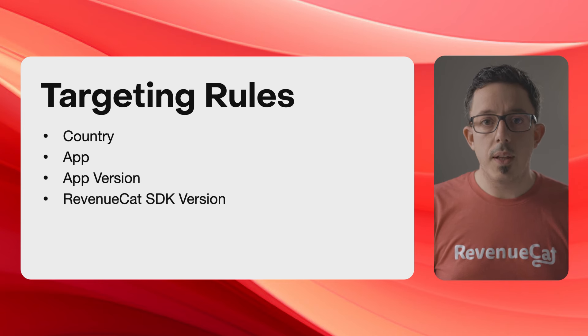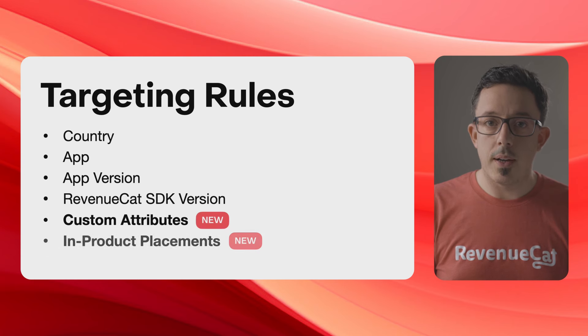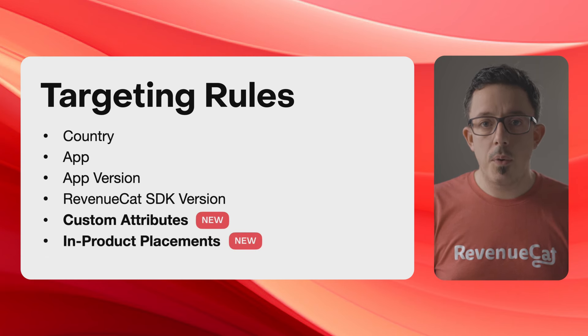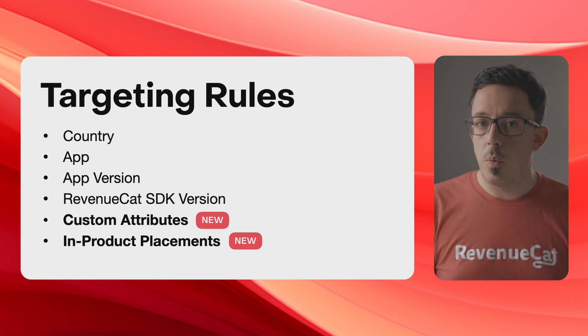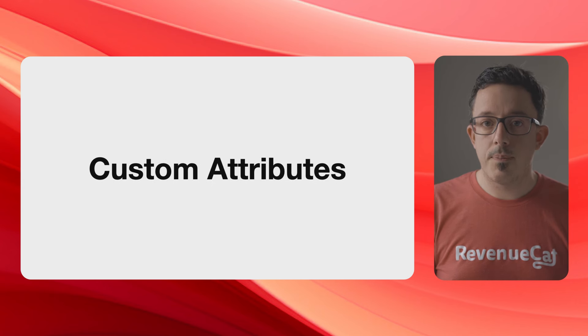With today's release, we're adding two new powerful rule types: custom attributes and in-product placement. Let's go through how each of these work.